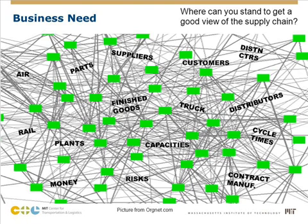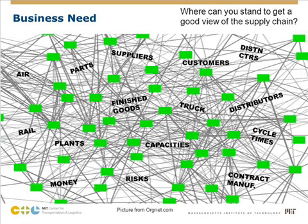Where can you stand to get a good view of the supply chain? Unfortunately, nowhere. The supply chain is a very complicated mixture of parts and finished goods and capacities and customers and plants and money flows and risks. It's very hard to describe this to senior management and have them understand.